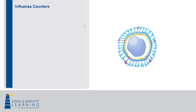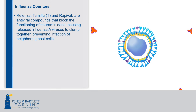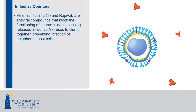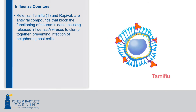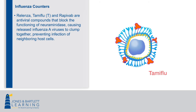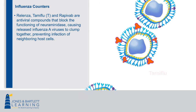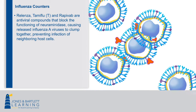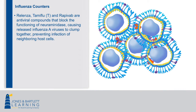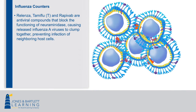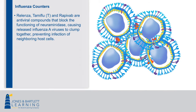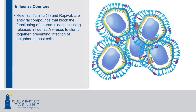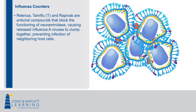Relenza, Tamiflu, and Rapivab are antiviral compounds that block the functioning of neuraminidase, causing released influenza A viruses to clump together, preventing infection of neighboring host cells.